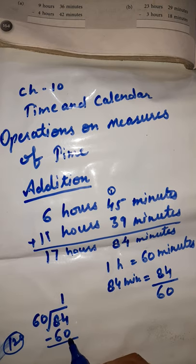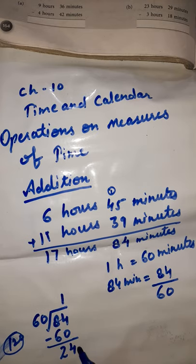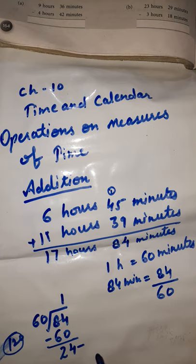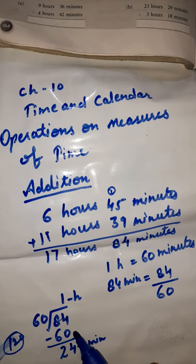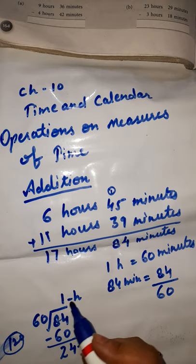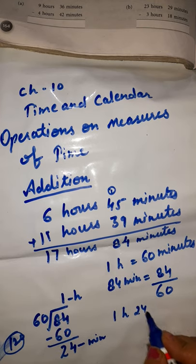Now subtract: 4 minus 0 gives 4, and 8 minus 6 gives 2. The remainder is 24. Since 24 is smaller than 60, we can't divide further. So 24 remains as minutes. The quotient, 1, converts to 1 hour. So 84 minutes equals 1 hour 24 minutes.